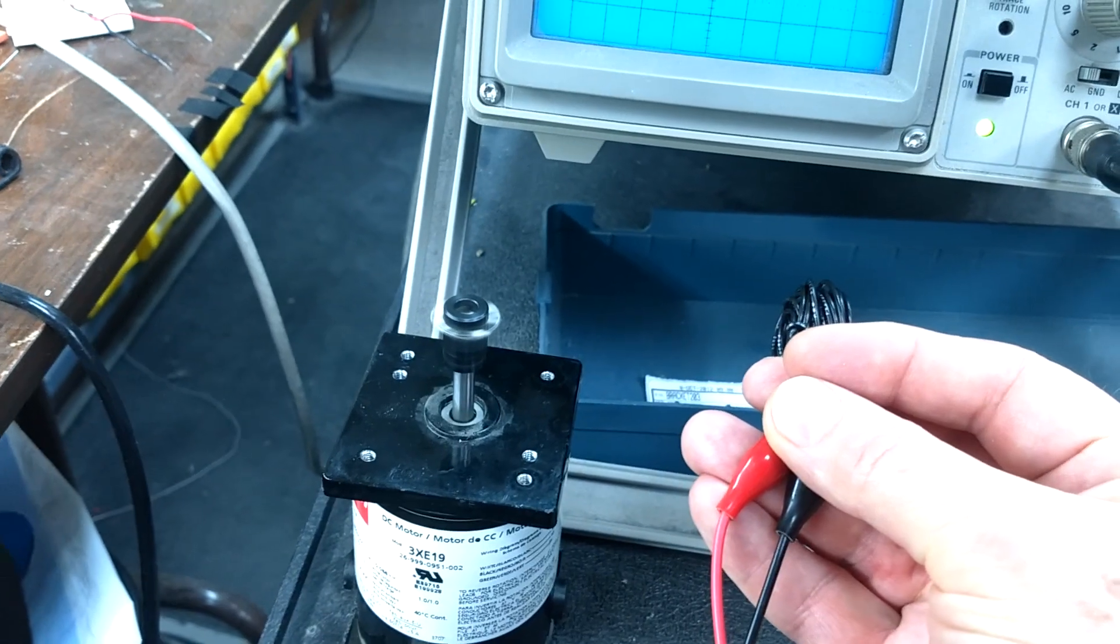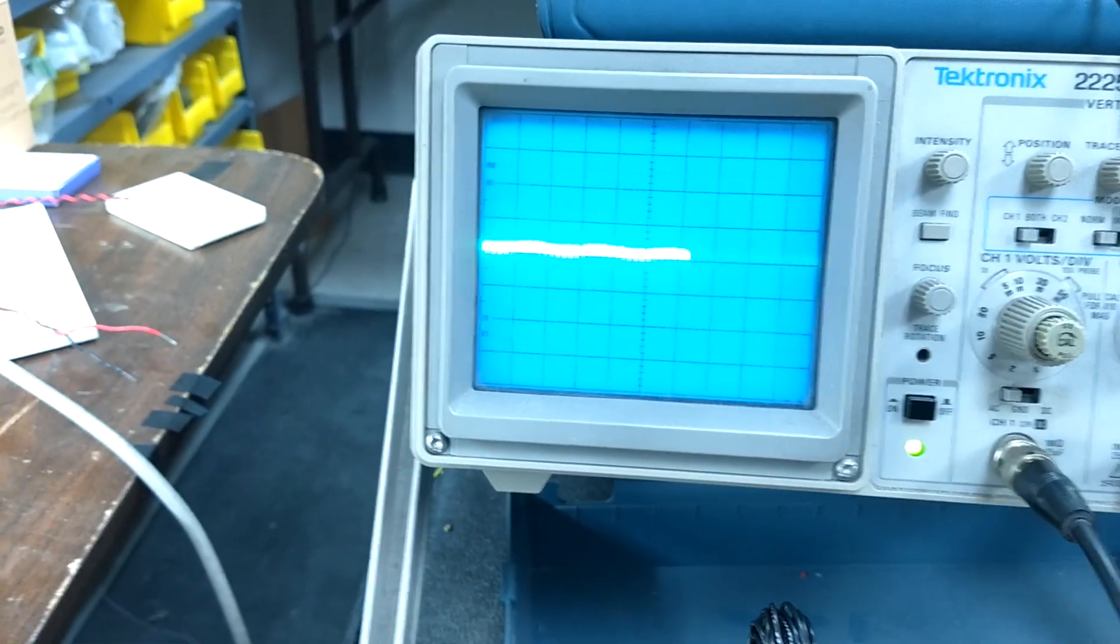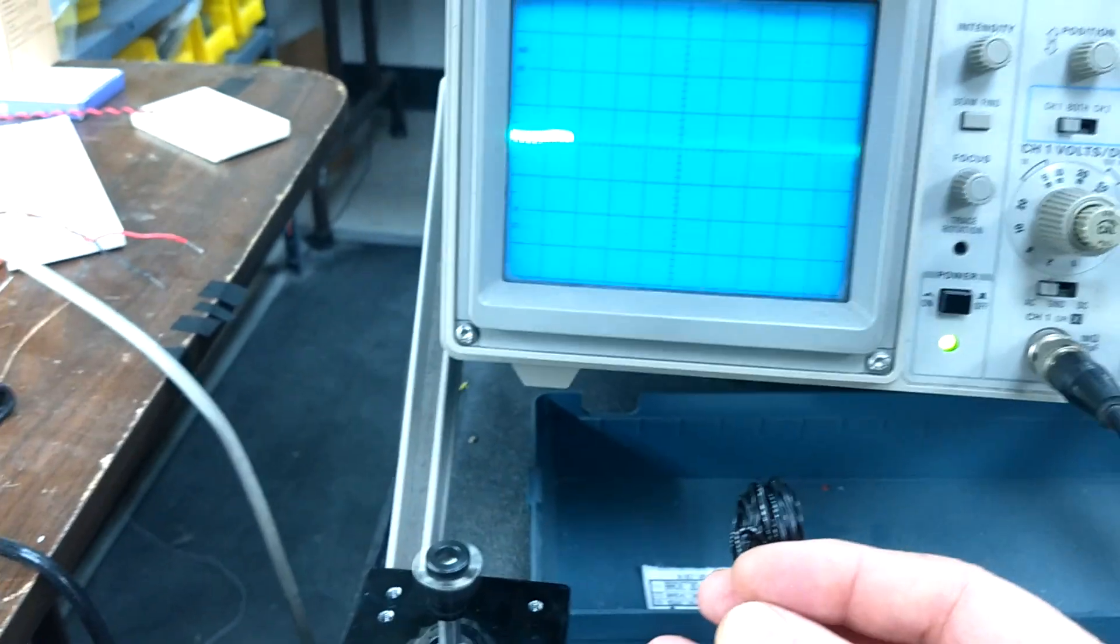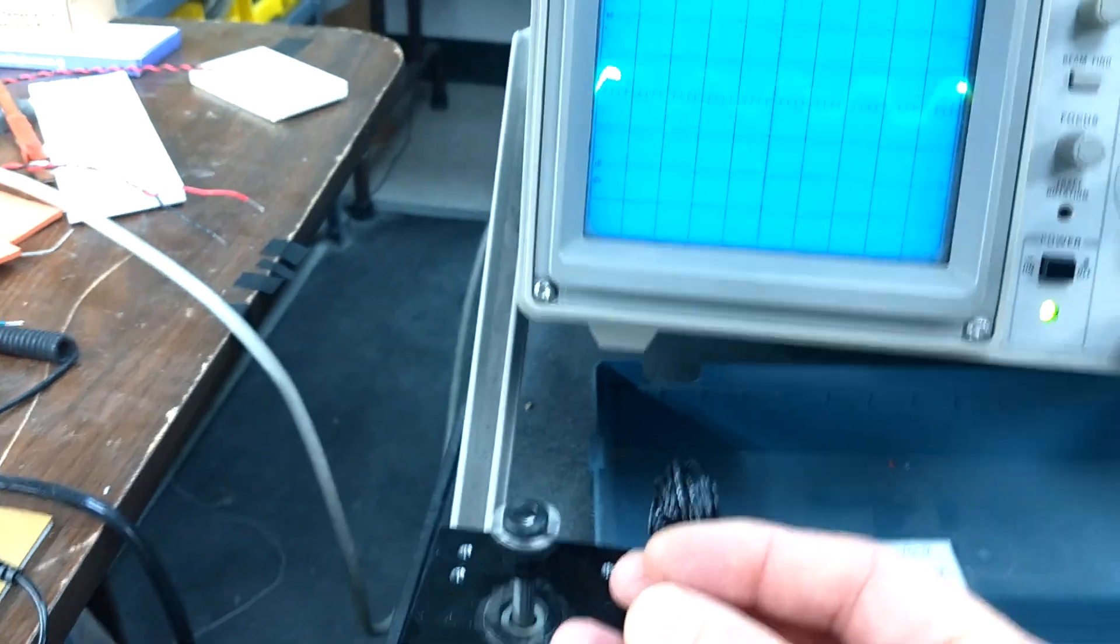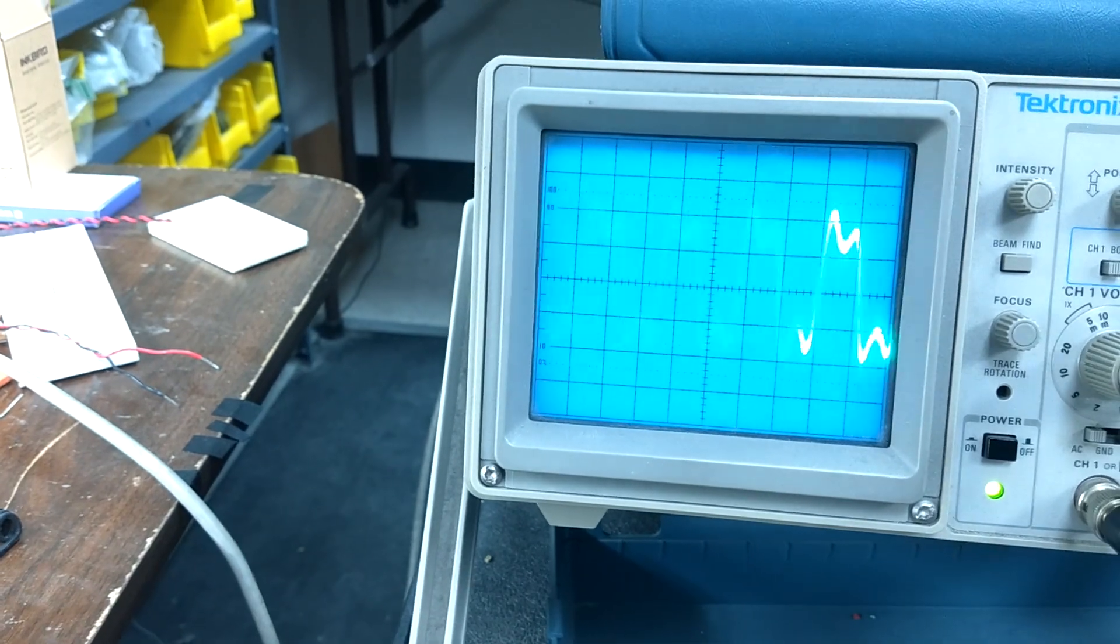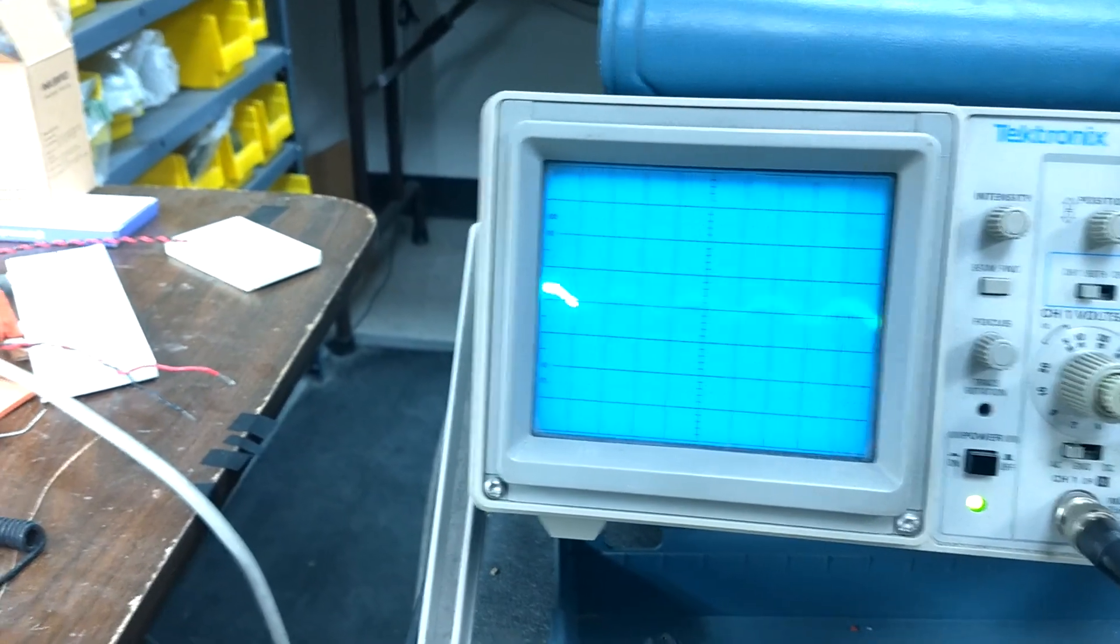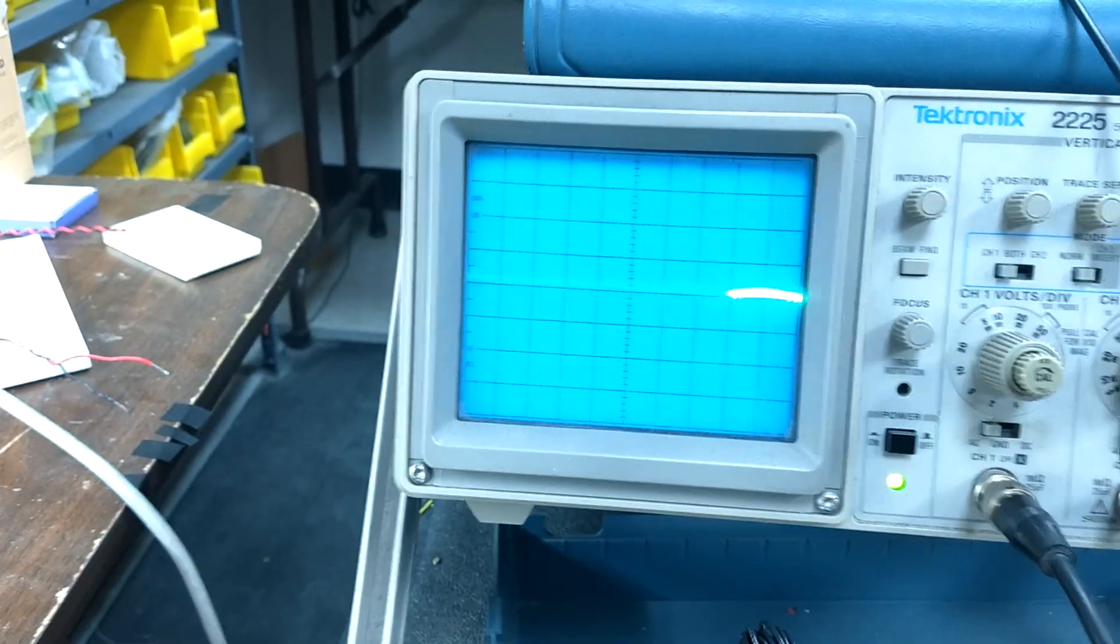Okay, at about five inches away, I can no longer detect much of a signal. But as we move in closer, the amplitude of the signal drastically increases. I'm going to change to a different coil and we'll do this again.